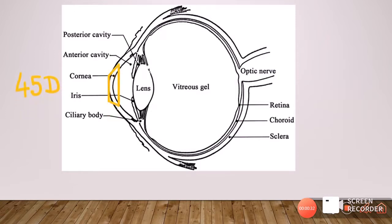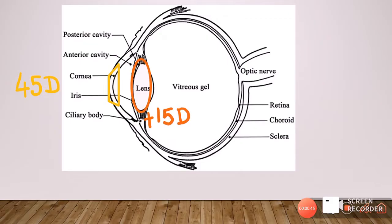As already discussed in the anatomy of the cornea, the major refractive surface is the cornea because it has the major power in the eye — about plus 45 diopters. The next refracting surface is our crystalline lens, which has about plus 15 diopters of power. Together, these two form the total power of the eyeball: 45 diopters from the cornea and 15 diopters from the lens.